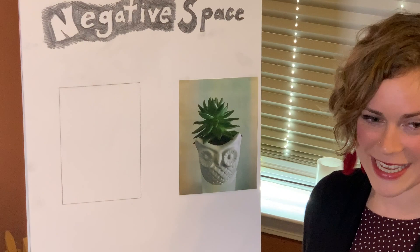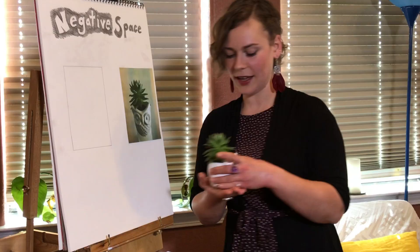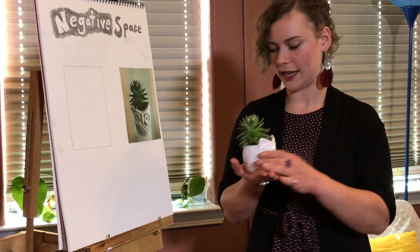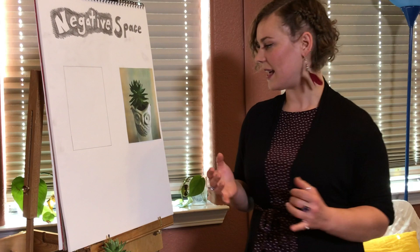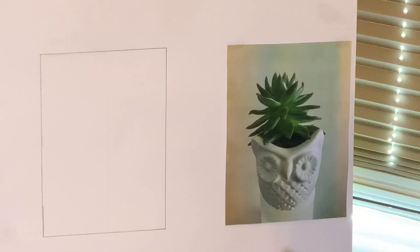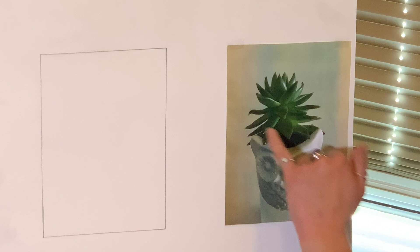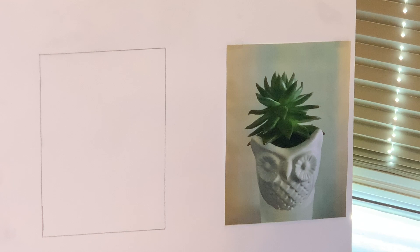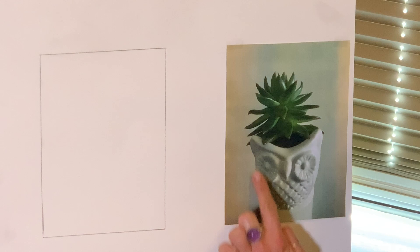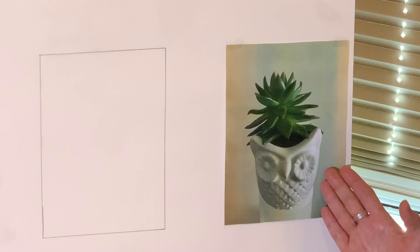So without further ado, negative space. We will be drawing this very fun little plant in a pot. What we consider to be the object in the image — in this case the pot and the plant — is what we call positive space. Whatever your subject matter is in the composition, that is your positive space, and everything around it is the negative space. For simplicity, this negative space is just the flat white background, but that's not always the case.